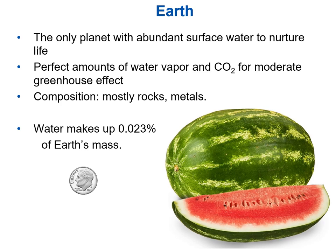Earth has perfect amounts of water vapor and carbon dioxide for a moderate greenhouse effect. Mercury had no atmosphere so none of the heat was locked in; Venus has a very thick atmosphere so too much heat gets locked in. But Earth is just right — just the right amounts of those greenhouse gases for a moderate greenhouse effect that allows for life. Earth's composition is mostly rocks and metals. Now, when you look at a globe of the Earth you see mostly water — it's more than 70% covered with water — but the water content of Earth is very little. Water makes up 0.023% of Earth's mass. A comparison: if a large watermelon represents the mass of the Earth, then the water would be about the mass of a dime.